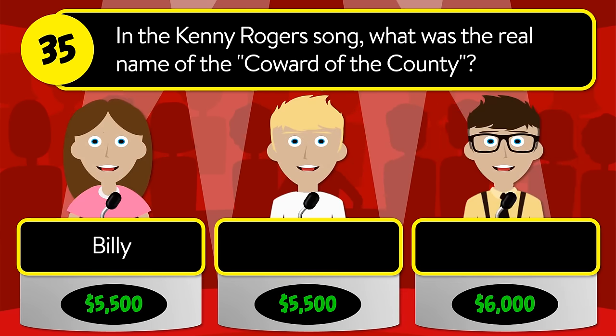Question number thirty-six: what is the approximate percentage of oxygen in the air? Is it 21 percent, 41 percent, or 61 percent? The correct answer is 21 percent.